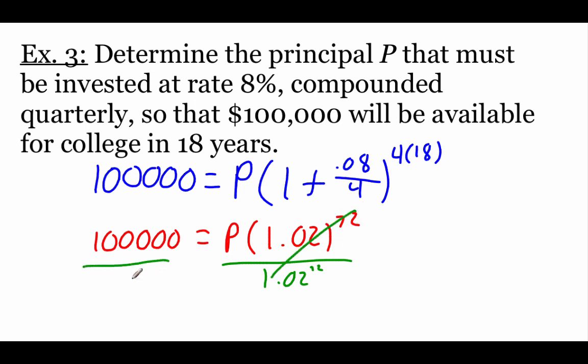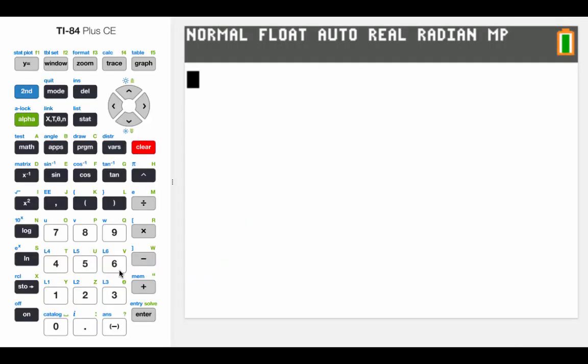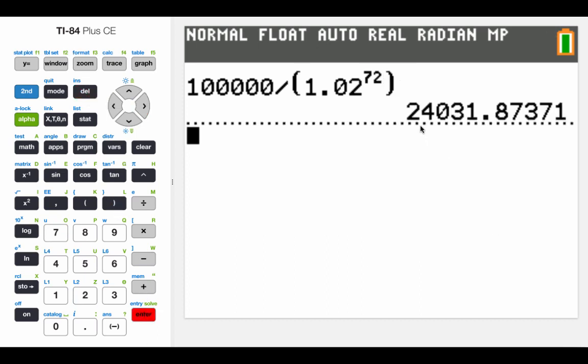And then I think I'm going to type this one into my calculator. In order to get the order of operations to work out correctly, I'm going to throw some parentheses in here. So we're going to take 100,000 divided by 1.02 raised to the 72nd power. Hit enter, and we get $24,031.87.